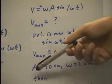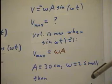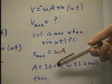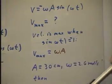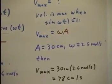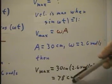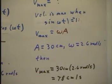For the system we observed, if we let a equal 30 centimeters with an omega of 2.6 radians per second, then what do we conclude about the maximum velocity? Well, we conclude that the maximum velocity will be omega here times a here comes out 78 centimeters per second.